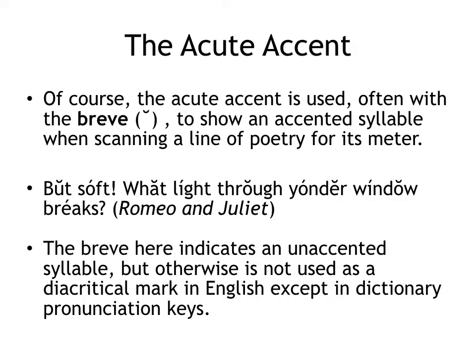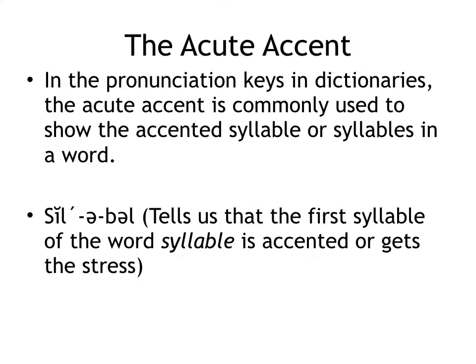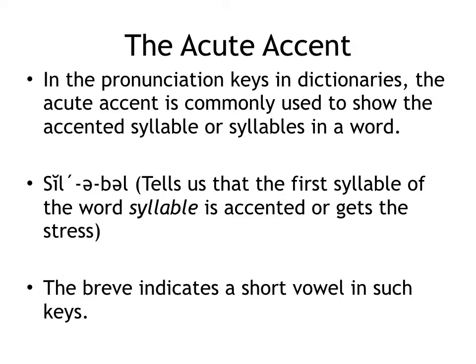The breve indicates an unaccented syllable but is otherwise not used as a diacritical mark in English, except sometimes in dictionary pronunciation keys. In pronunciation keys and dictionaries, the acute accent is commonly used to show the accented syllable or syllables in a word. Sometimes you will see a dictionary entry where the accent points to the first syllable, telling us the first syllable of the word 'syllable' is accented. That particular key also has a breve over the i to show that it is pronounced like a short i in that pronunciation key.